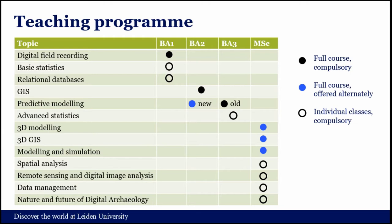Instead, there will be some classes on more advanced statistics in the new program. Since a few years, we are offering a master's track in digital archaeology. This is part of a larger Master of Science program in which we also teach material culture studies and bioarchaeology. Here the program gets less structured — it's more about giving students opportunities to choose. We have been offering a number of core courses, but not all of them each year. 3D modeling is always in high demand. 3D GIS, related to that, will be offered as a separate course now. We've been able to offer one course on modeling and simulation, and I'm going to come back to that later.